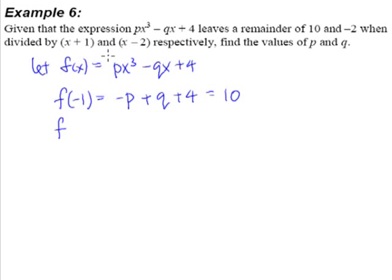The next one we know is when we divide by (x - 2), which means when we substitute in x = 2, we will get 8p - 2q + 4 = -2.